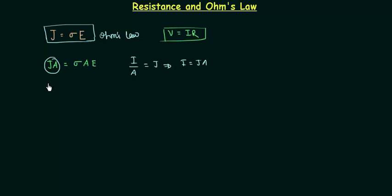So this JA is nothing but my current. So I can write it as I equals to sigma A times E. E is the electric field intensity and it can be written as potential difference V divided by the length of the conductor. You must have studied these things in your electrostatics.